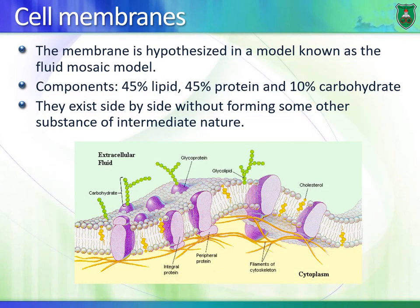Now let's talk about cell membranes. The cell membrane is described by the fluid mosaic model — it looks like a complex mosaic. It's made of a lot of components: 45% lipids, 45% protein, and 10% carbohydrates.